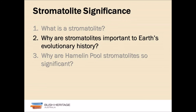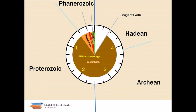Why are stromatolites important to Earth's evolutionary history? If we look at Earth's history — the Hadean, beginning about 4.5 billion years ago, was a really hot hell with constant impacts basically evaporating all the water on the surface. It's literally hell on Earth.